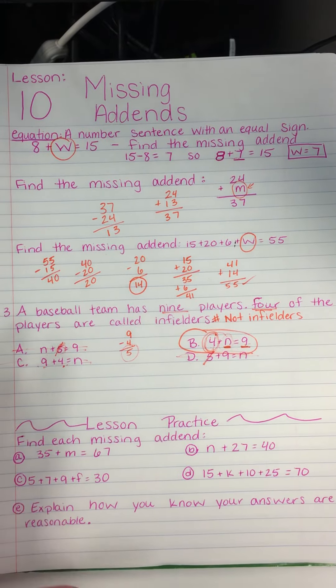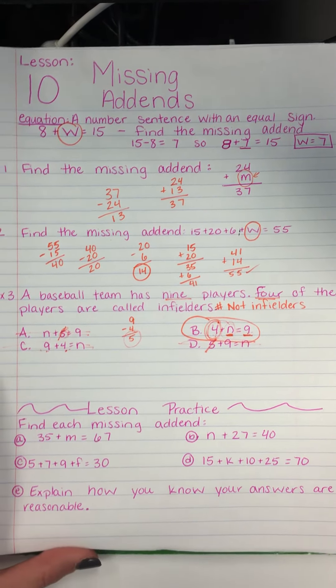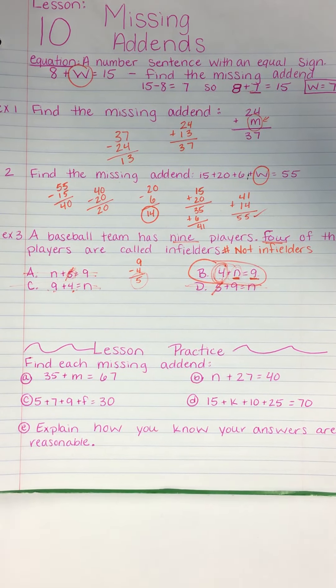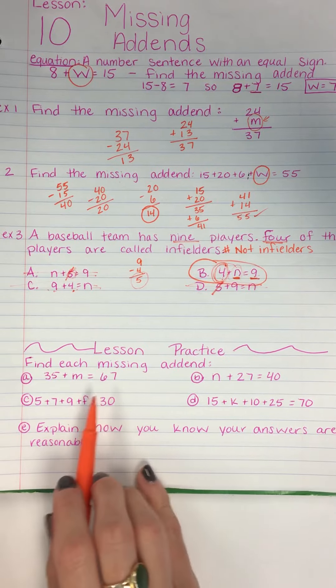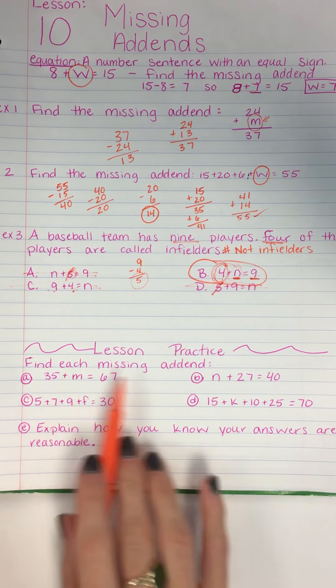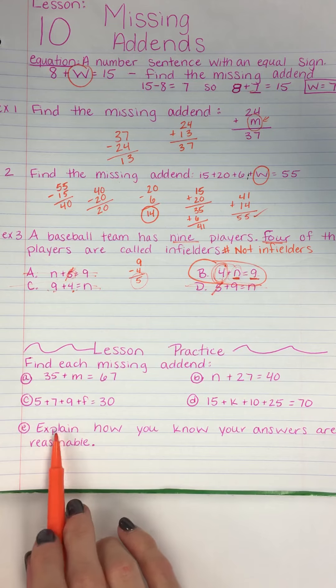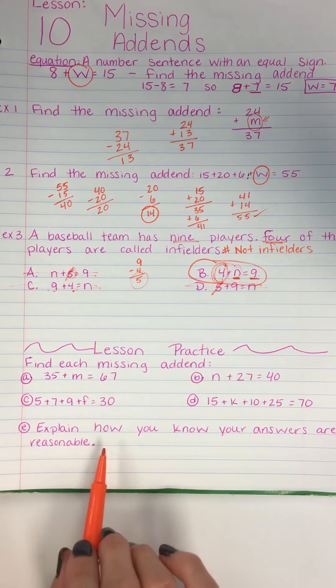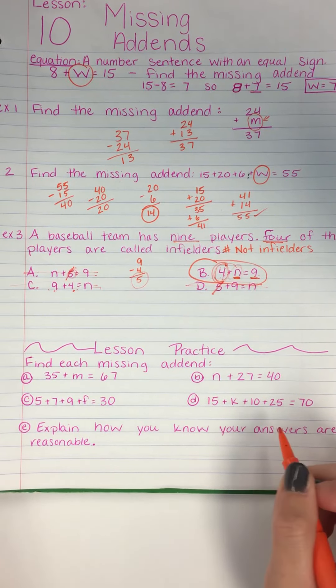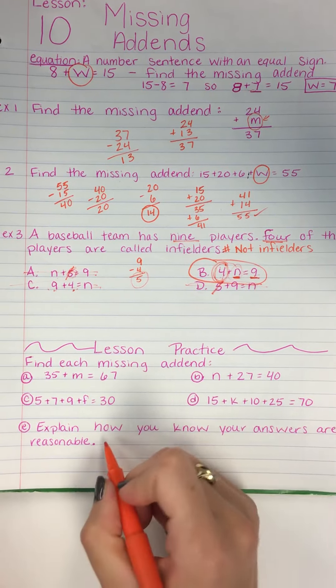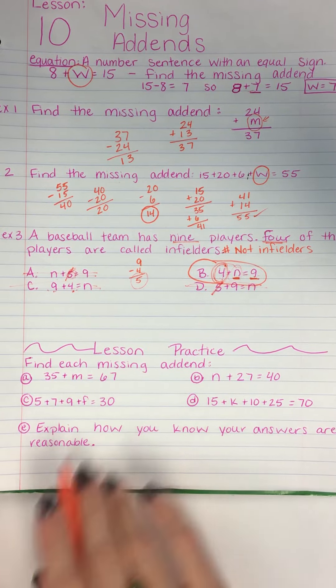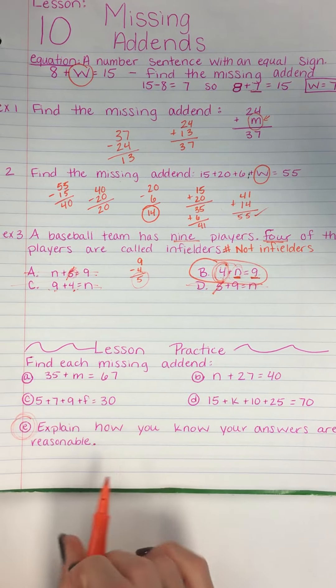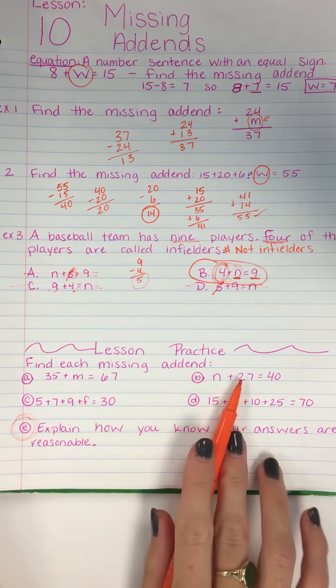Alright, good. And then for lesson practice, you are finding the missing addend. So make sure you double check these to make sure that your answer is right. And then for, once you double check them, you can, it says, explain how you know your answers are reasonable. Say, because I double checked my work. Say, fact families. Or something like that.